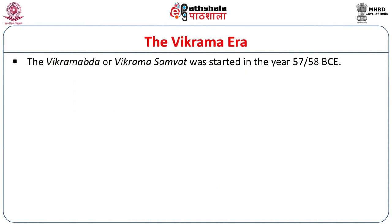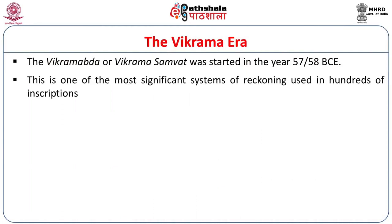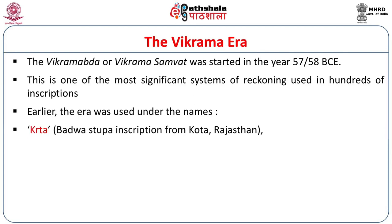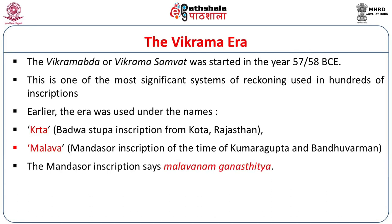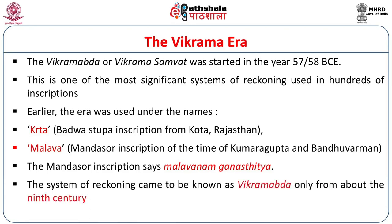We may start with the Vikrama era, which was initiated in 57 or 58 BCE. The Vikramabda or Vikrama Sambath was started in 57 or 58 BCE. This is one of the most significant systems of reckoning used in hundreds of inscriptions. Earlier the era was used under the names like Krita, as seen at the Barwa stone inscription from Kota, Rajasthan, or under the name Malava era as evidenced at the Mandasaur inscription of the time of Kumara Gupta and Bandhuvarman. The Mandasaur inscription says Malavanangana Sthitya in recording the date. The system of reckoning came to be known as Vikramabda or Vikrama Sambath only from about the 9th century CE.